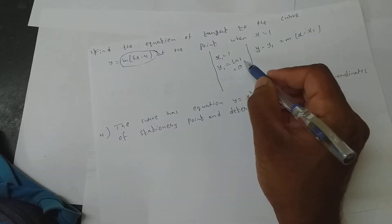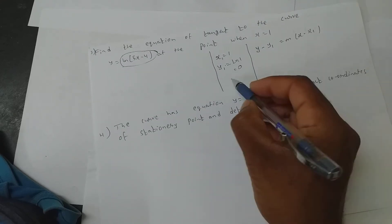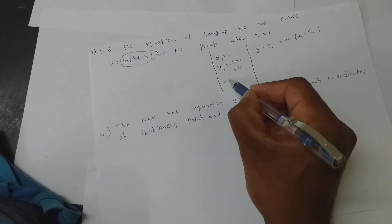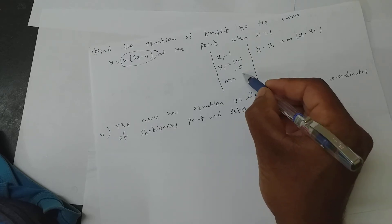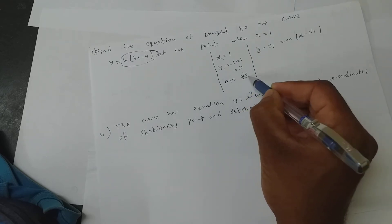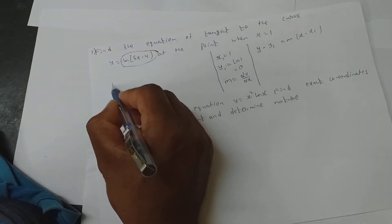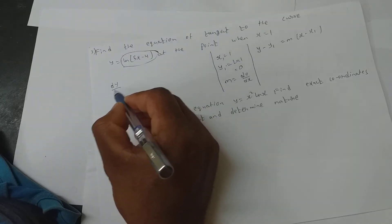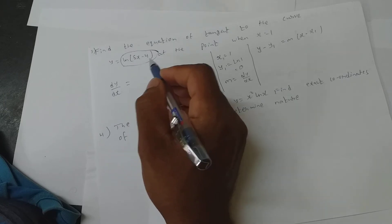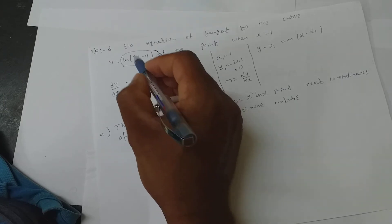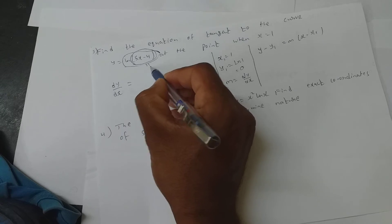So now your x1 is 1 and y1 is 0. What else do you need? You need m. Many times I have told you m is nothing but dy by dx. So now differentiate this. dy by dx equals — it is of which form? ln x form. This entire thing you assume it to be x.